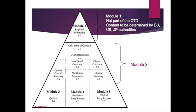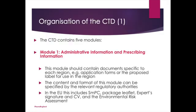In this slide you will find a pictorial representation of the CTD structure, presented in a pyramid form showing different modules which are part of a complete dossier. These are: Module 1 Regional Information, Module 2 CTD Table of Contents and CTD Introduction, Module 3 Quality, Module 4 Non-Clinical Study Reports, and Module 5 Clinical Study Reports.